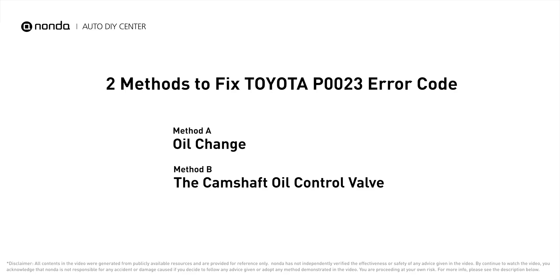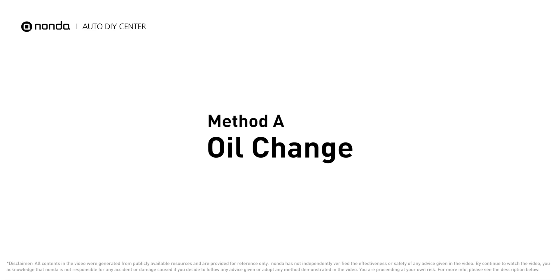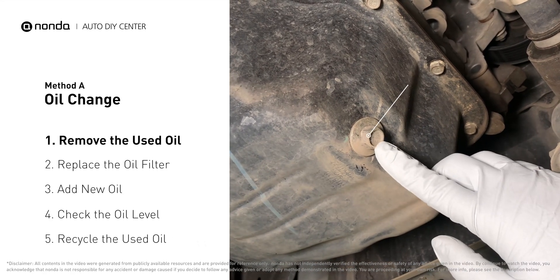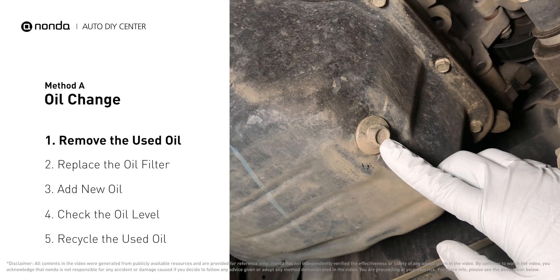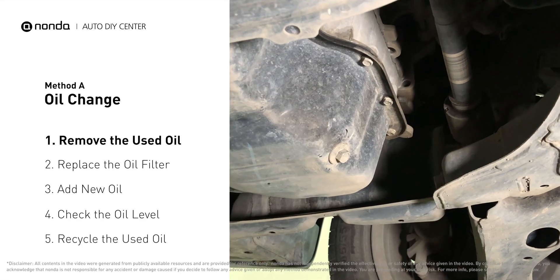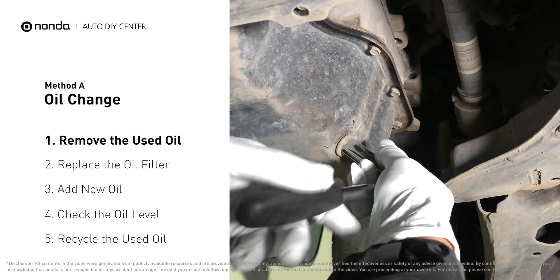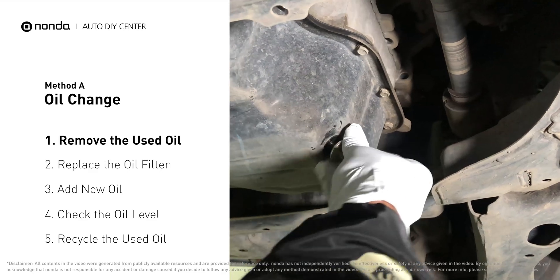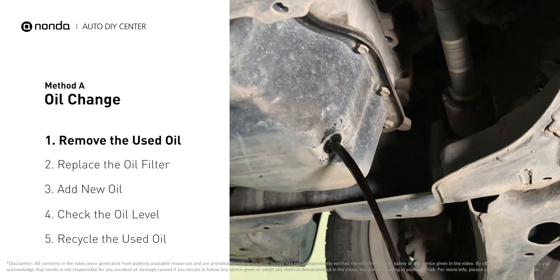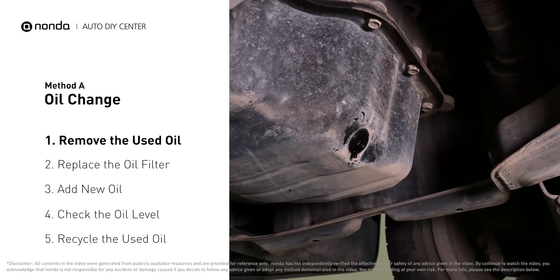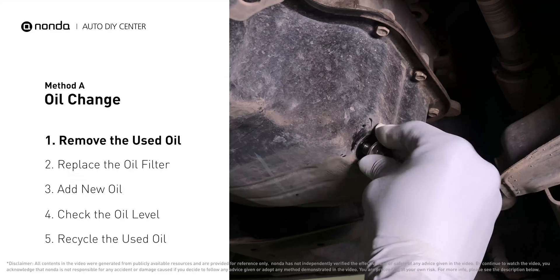Here are two of the most practical solutions to fix Toyota's P0023 error code. Method A: oil change. Locate the oil drain plug on your vehicle and place an oil collection pan underneath it. Use a socket ratchet to remove the plug from the oil pan. Once the plug is removed, the oil should start flowing out into your collection pan. Once all the oil is drained, replace the drain plug and tighten it back on.